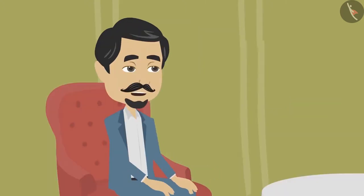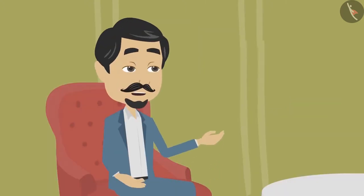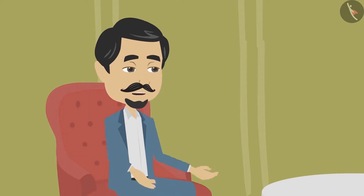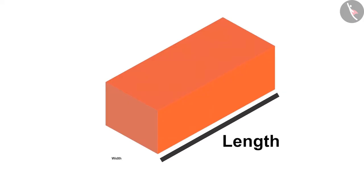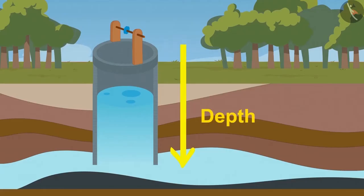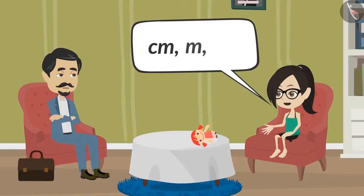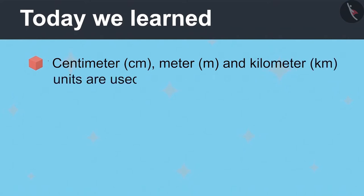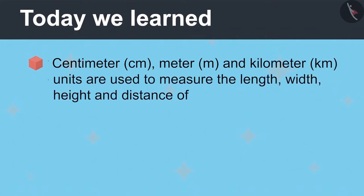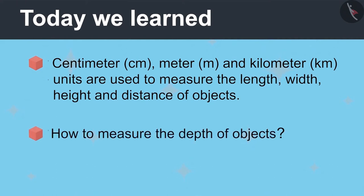In the next class, you will study about these objects. Now tell me whether you understood what centimeter, meter and kilometer can be used to measure? Yes, Papa. The length, width, height, depth and distance of objects are measured in centimeters, meters and kilometers. Today we learned that centimeter, meter and kilometer units are used to measure the length, width, height and distance of objects and how to measure the depths of objects.